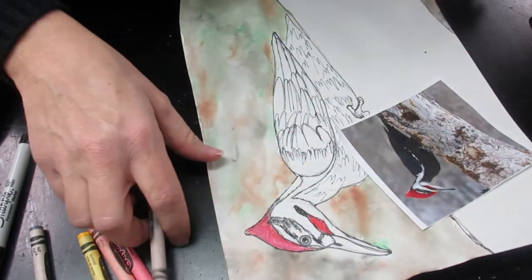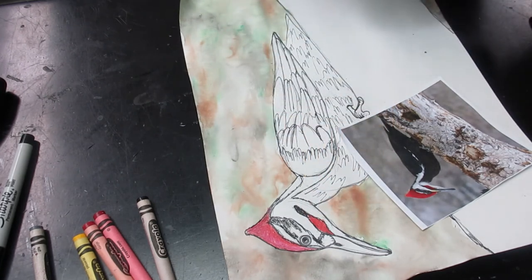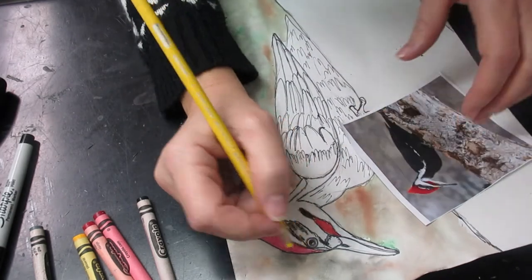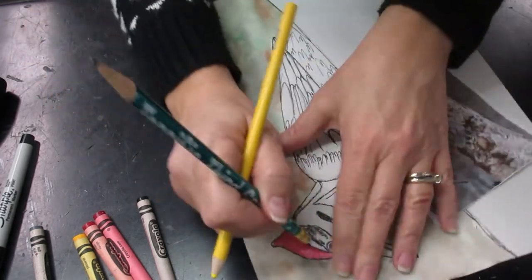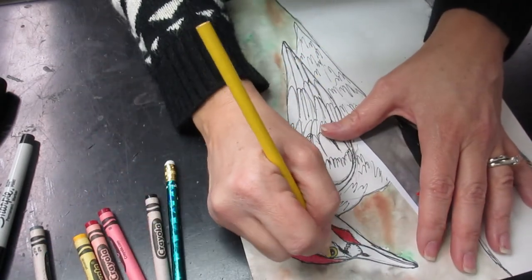Take your time. Think about your neatness. If you need to get out a color pencil for an area, there's no way I can do this eye here without going outside the line. So I'm going to grab a yellow color pencil real quick and color that yellow part.